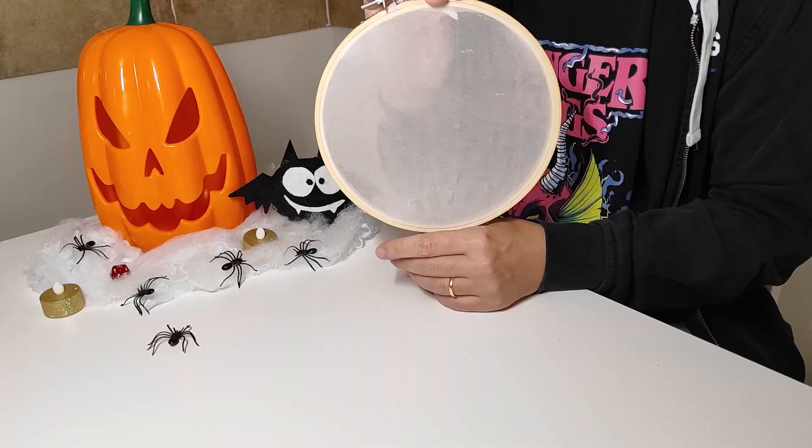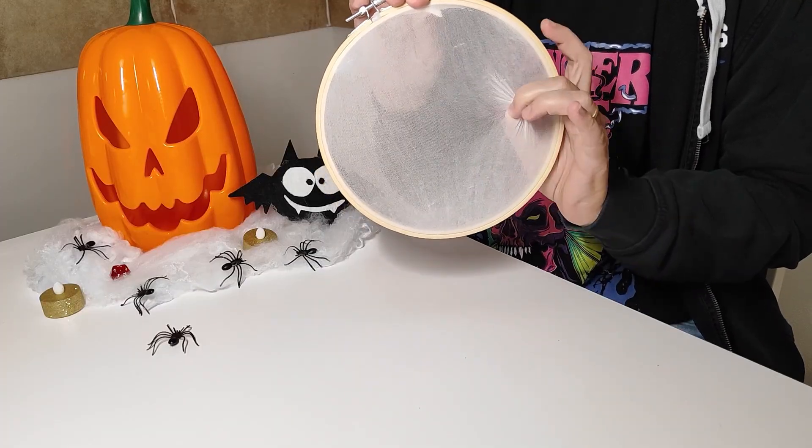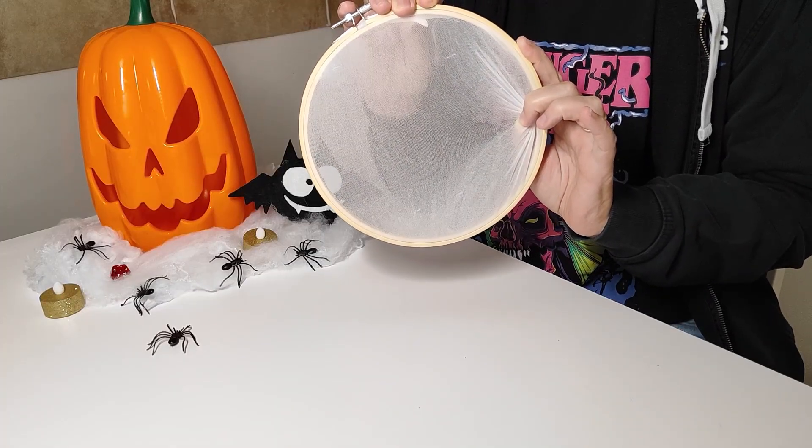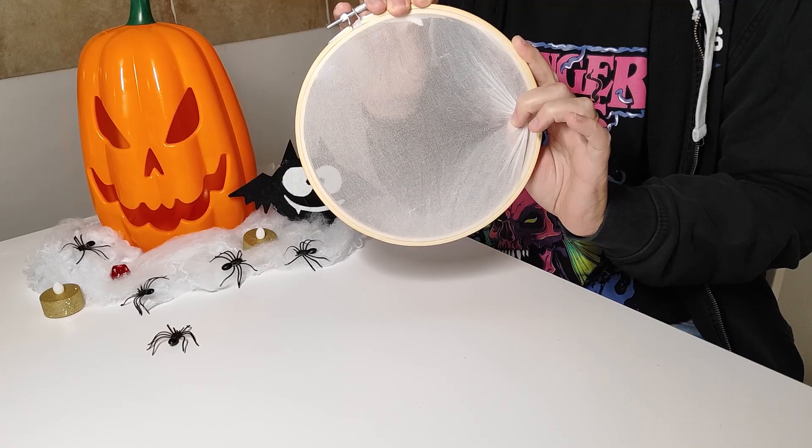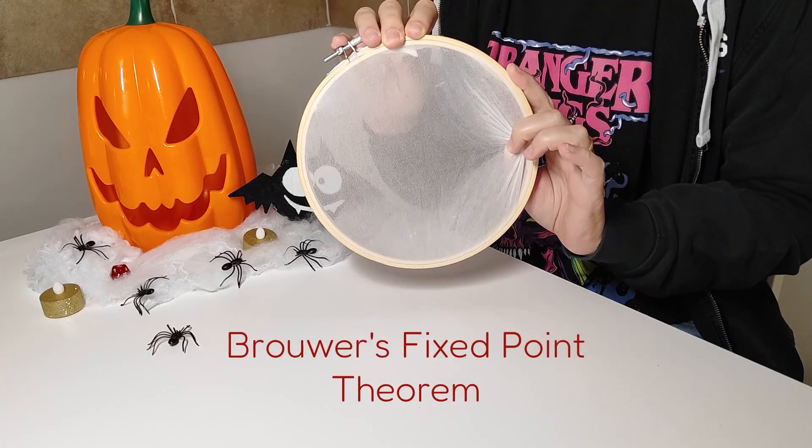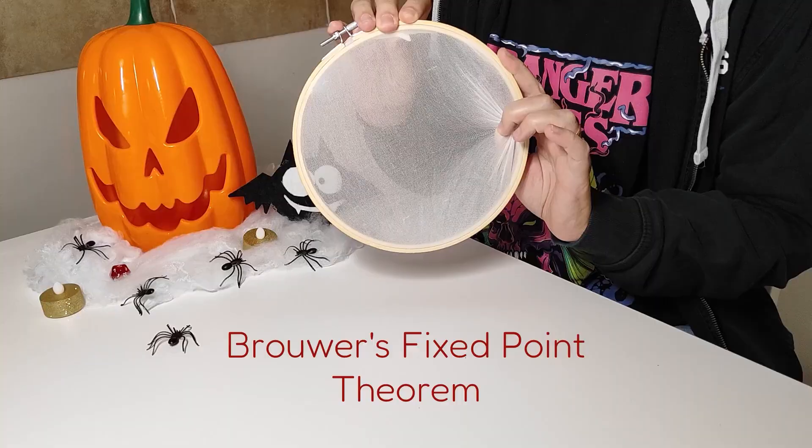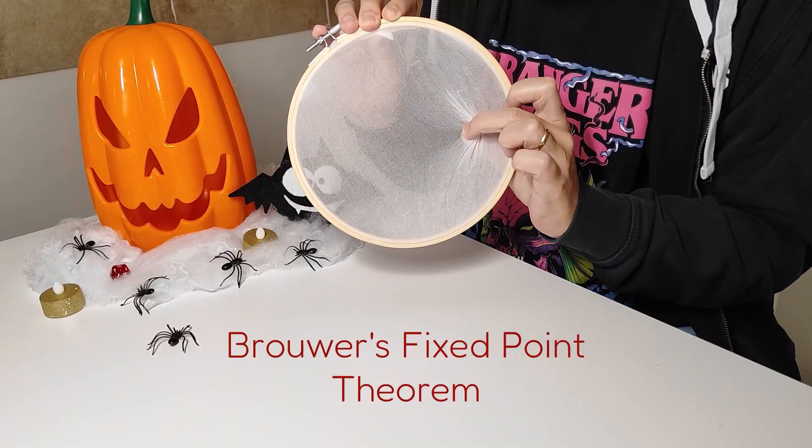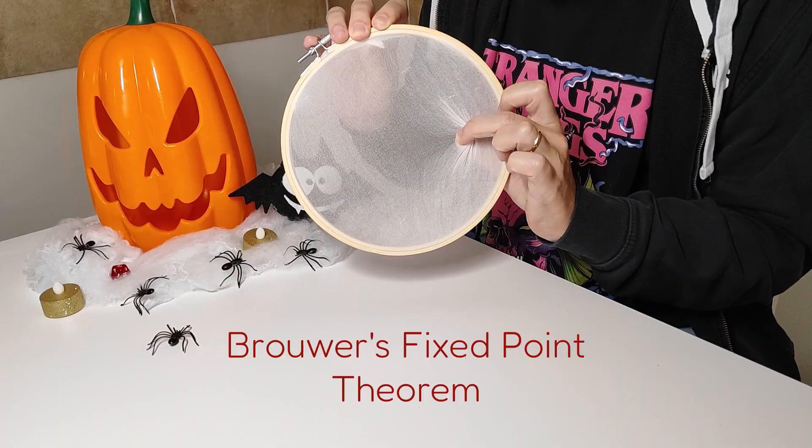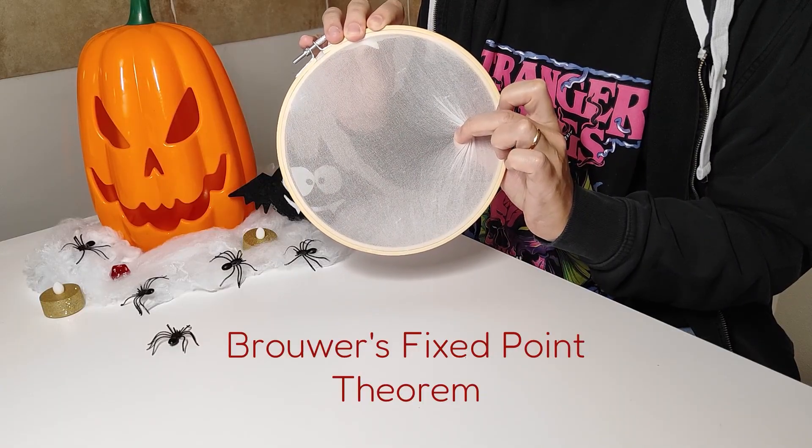But if I now deform the fabric slightly, pulling it to one side, even the center would move. However, and this is the heart of today's video, according to Brouwer's Fixed Point Theorem, there would still be another point somewhere, I don't know exactly where, but it's there, that stays perfectly fixed on the same position it started from.